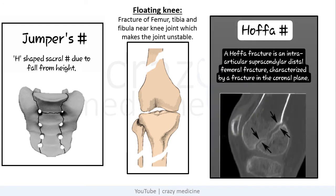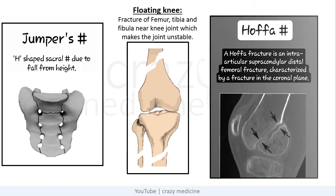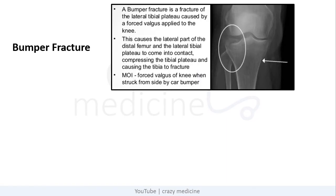Then Hoffa's fracture — a Hoffa fracture is an intra-articular subcondylar distal femur fracture characterized by a fracture in the coronal plane. The next is Bumper's fracture — a Bumper fracture is a fracture of the lateral tibial plateau caused by a forced valgus applied to the knee. This causes the lateral part of the distal femur and the lateral tibial plateau to come in contact, compressing the tibial plateau.